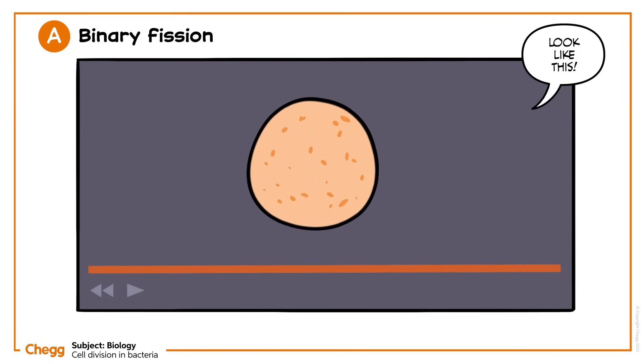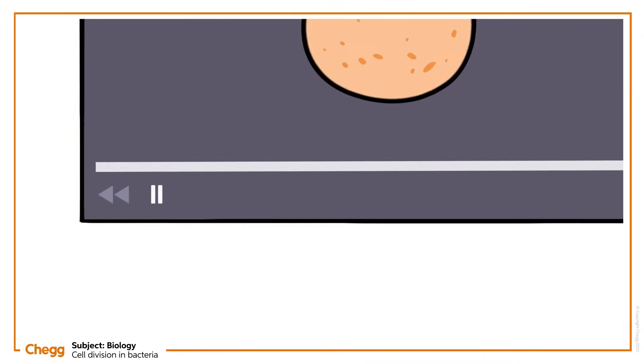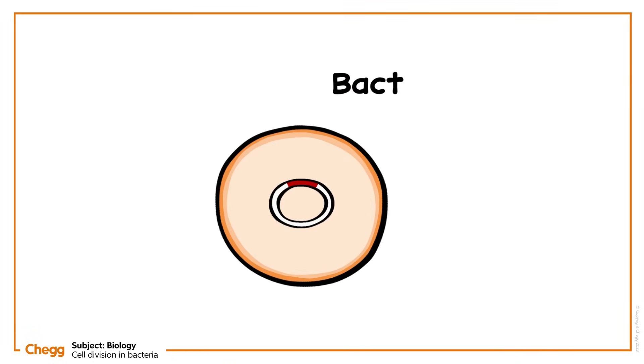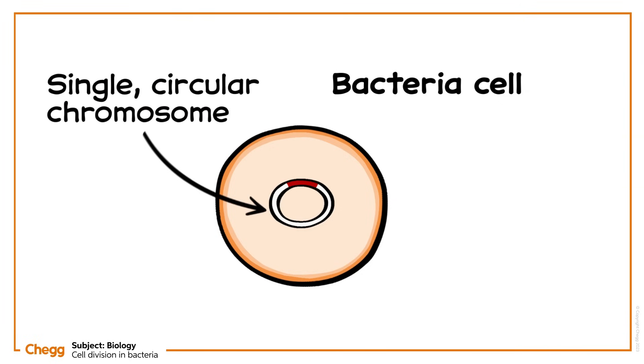What just happened? Let's rewind and take a closer look. Here's a bacterial cell. Notice that it has a single, circular chromosome. The chromosome is found in a specialised region of the cell, called the nucleoid. Marked in red is a spot called the origin of replication.